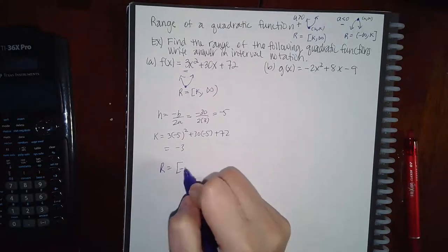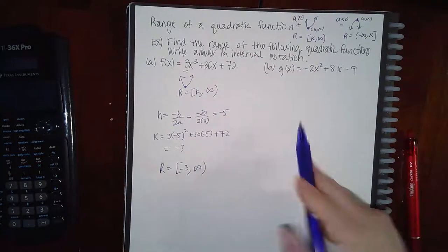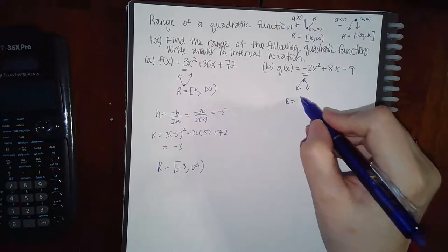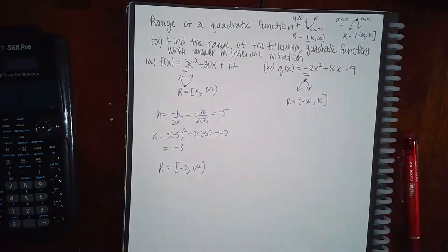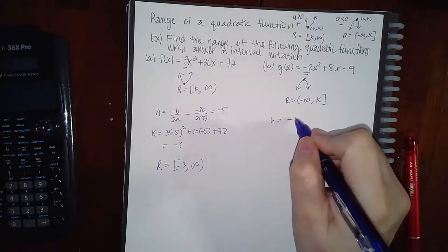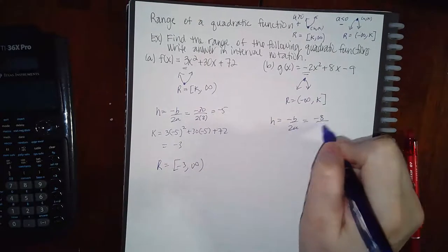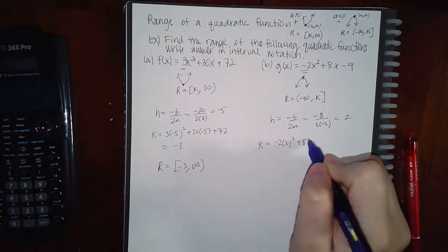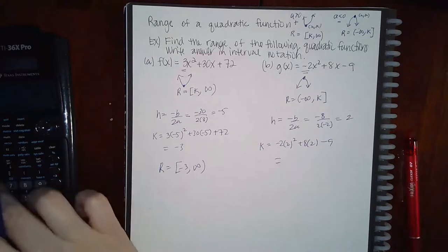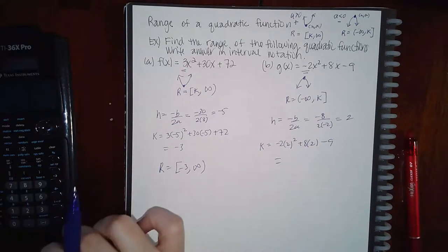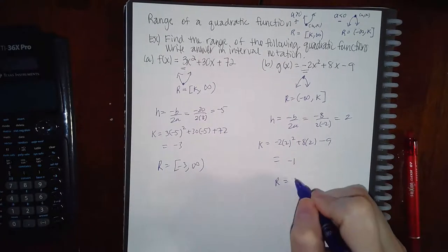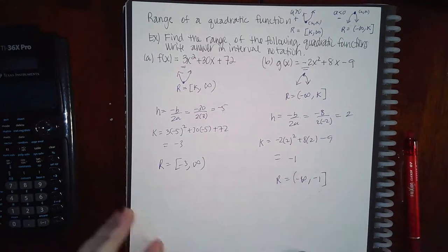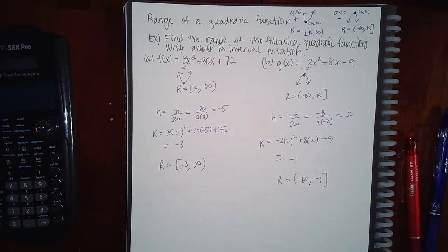For a problem where a is negative, the parabola opens downward, so the range goes from negative infinity up to k. Find h = -8/(2·(-2)) = 2. Plug in x = 2 to get k = -1. The range is (-∞, -1].